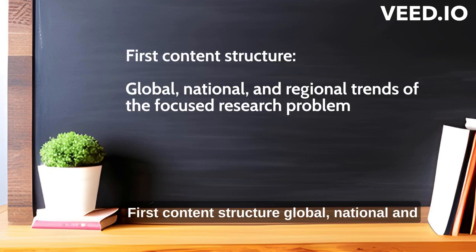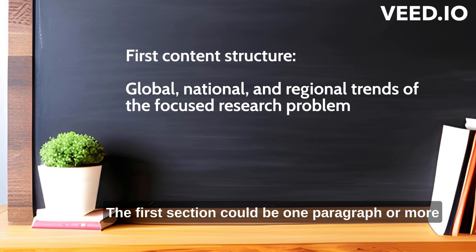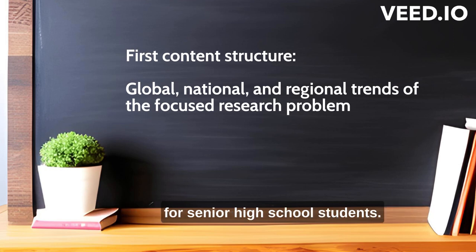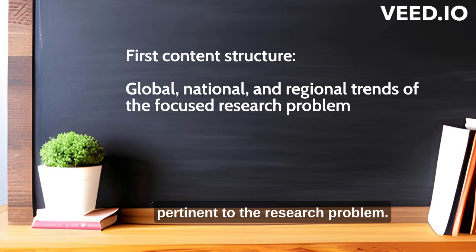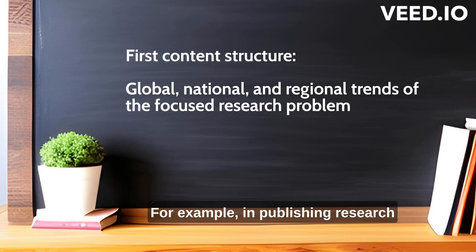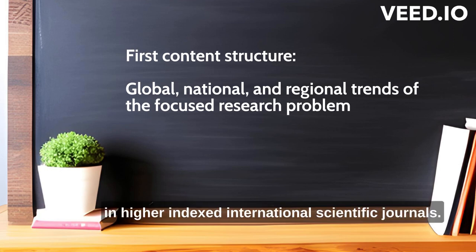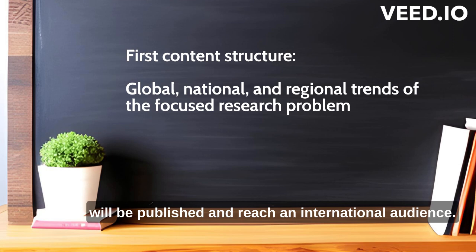First Content Structure: Global, National, and Regional Trends of the Focused Research Problem. The first section could be one paragraph or more. For senior high school students, one section is considered appropriate if it describes the global, national, or regional trends pertinent to the research problem. This section gives readers an overview of the broader scope of the problem. For example, in publishing research in higher-indexed international scientific journals, the global relevance of the research problem is an excellent consideration for why the study will be published and reach an international audience.